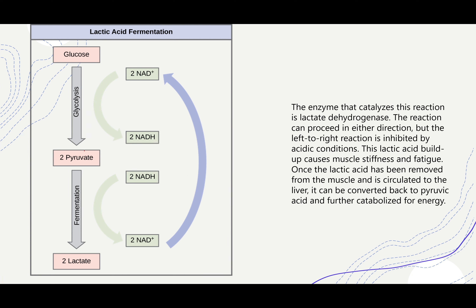Glucose goes through glycolysis to produce two pyruvates. With no oxygen, we cannot continue the link reaction or anything else. So our cells will continue through lactic acid fermentation. Remembering glycolysis, we consumed NADH — now we're going to consume another round of NADH within fermentation to produce two lactates, or what we call lactic acid. It produces two NADs which continue in the entire cycle, using lactate dehydrogenase.